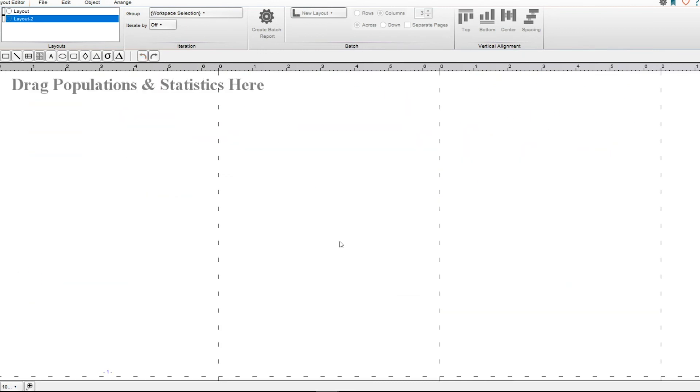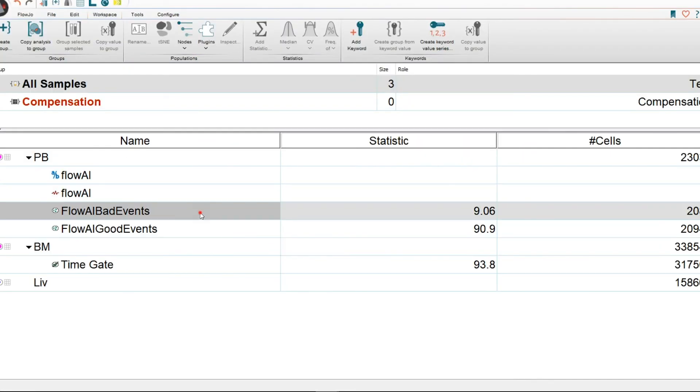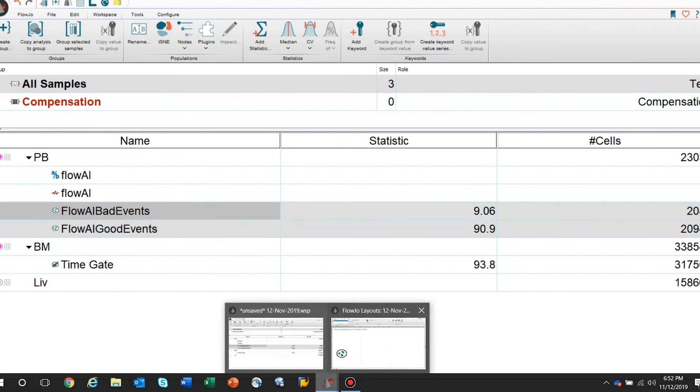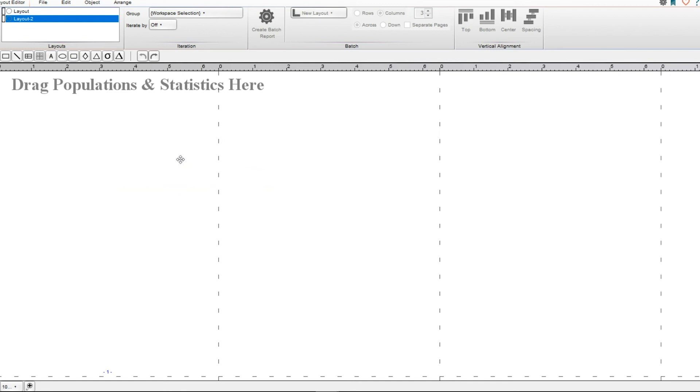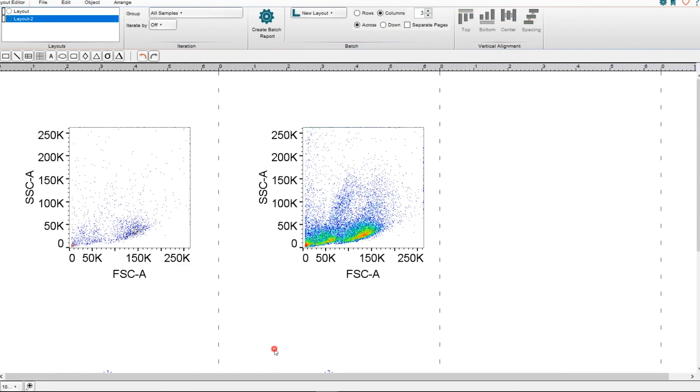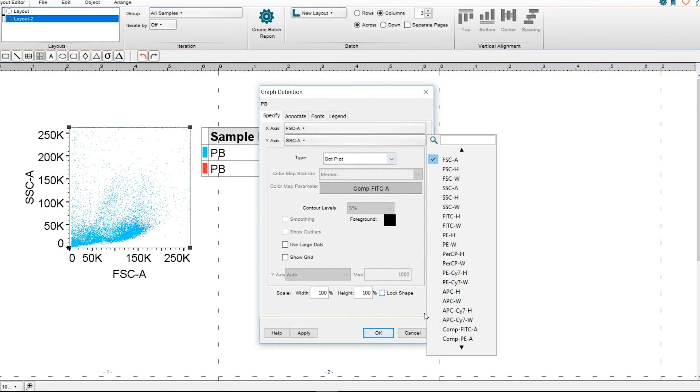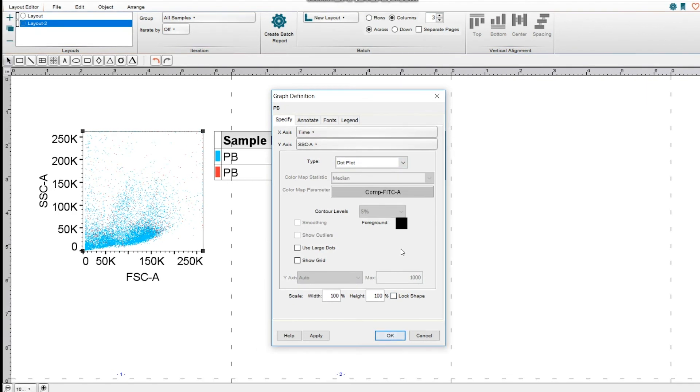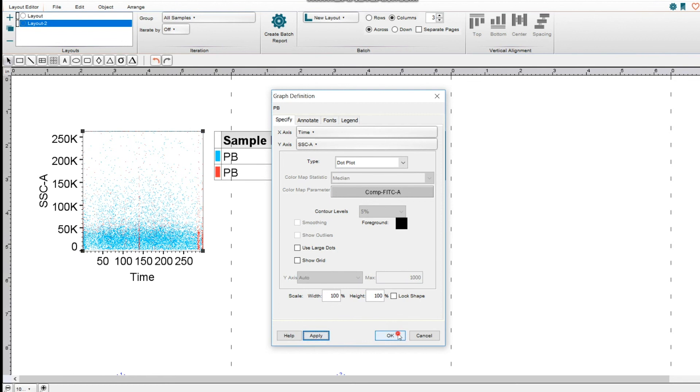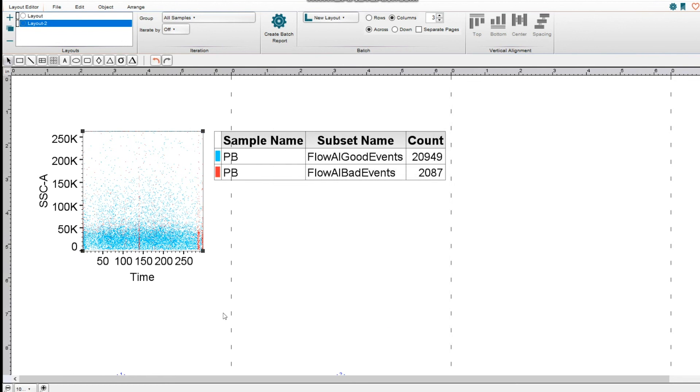Alternatively, we could also create another layout sample, and we could select the two samples, populations, put them in and do an overlay of each other, select the parameters, and then check what it was that got removed per parameter, as you can see here.